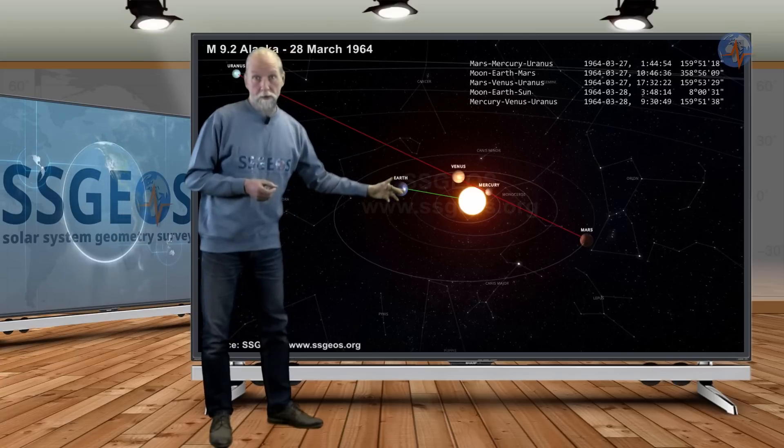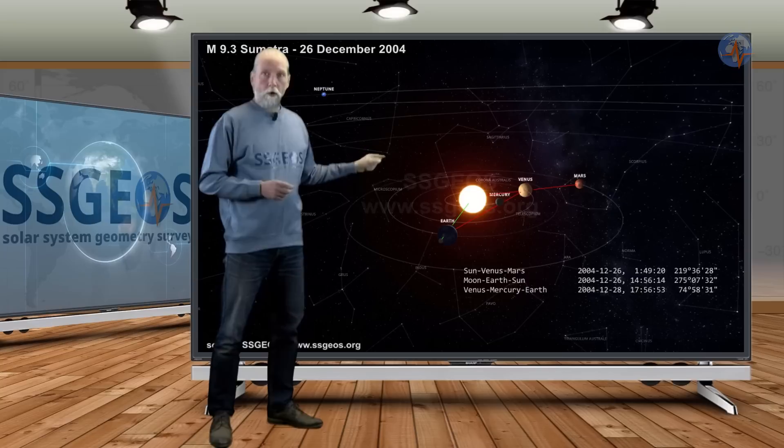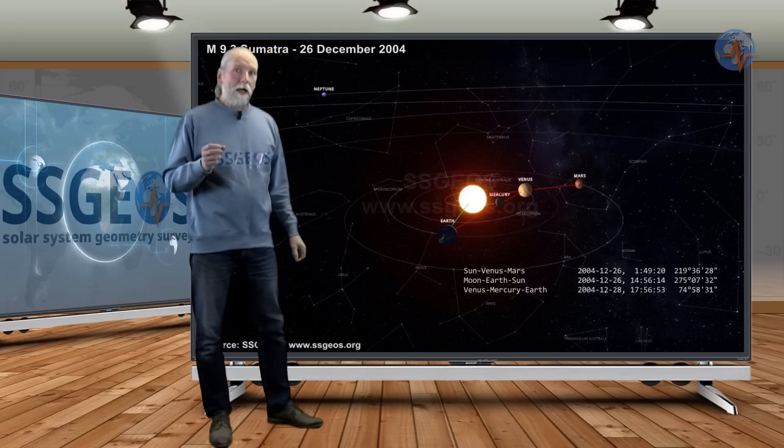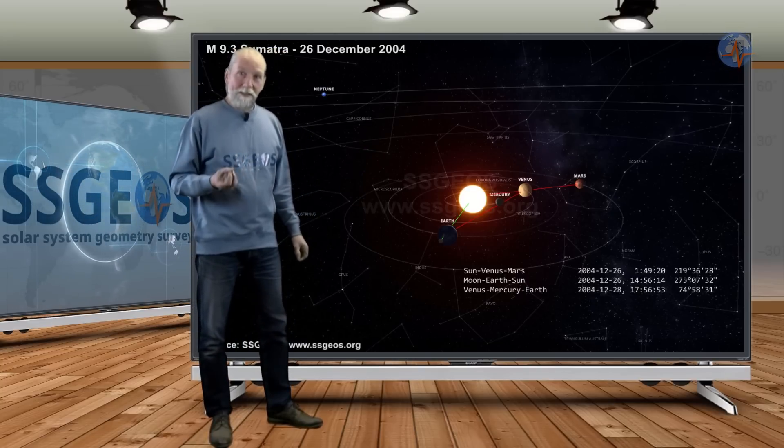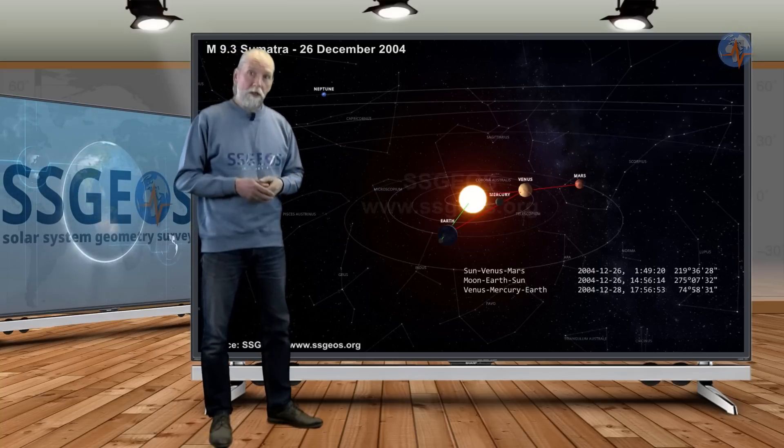In 2004, also a magnitude 9 earthquake at Sumatra at the time of full moon, but at the same time Earth was in a near conjunction with Mercury and Venus, while at the same time Venus was in a conjunction with the Sun and Mars.